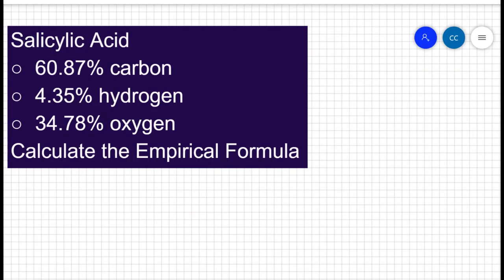Now the percentages given to us are percent by mass. The good thing is that we have the law of constant composition working on our side. It doesn't matter how big of a sample of salicylic acid you have, these percentages will always hold true. So let's pick one that's really convenient. When given percentages like this, I always consider a 100 gram sample.